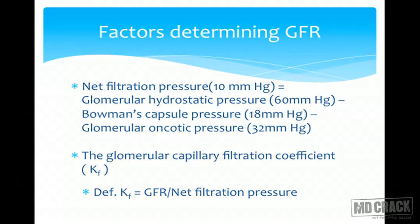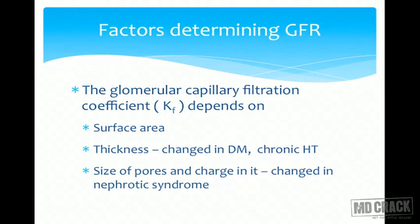The glomerular capillary filtration coefficient equals GFR divided by net filtration pressure - that is, how much filtrate is formed per unit of net filtration pressure. The filtration coefficient depends on the surface area; a larger surface area means more filtration.